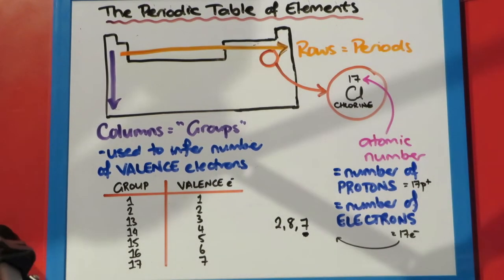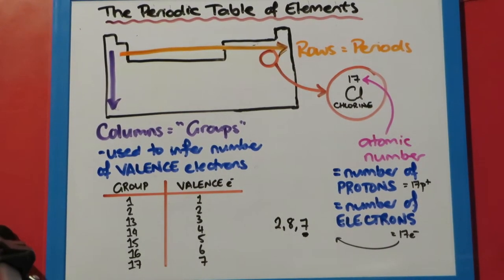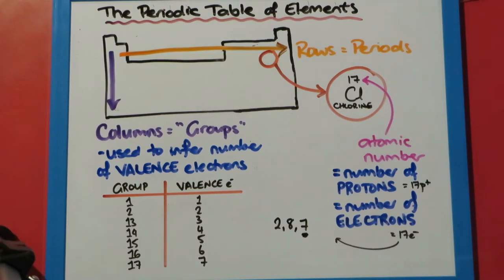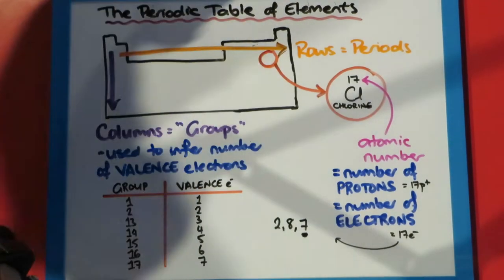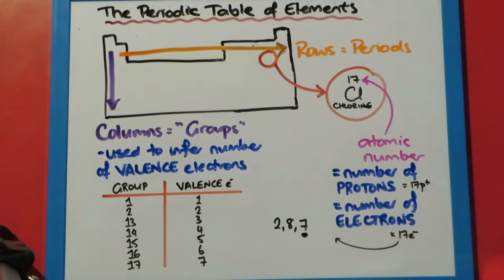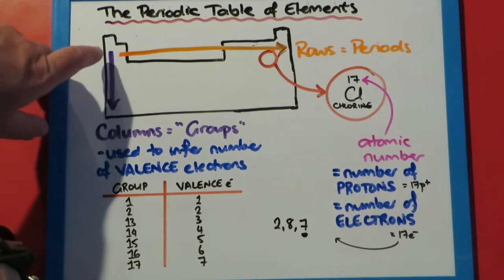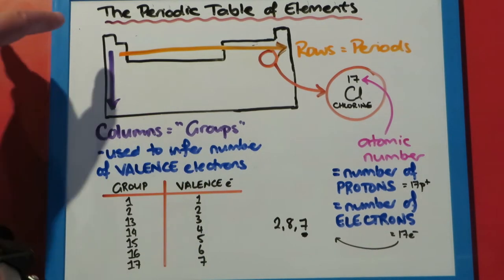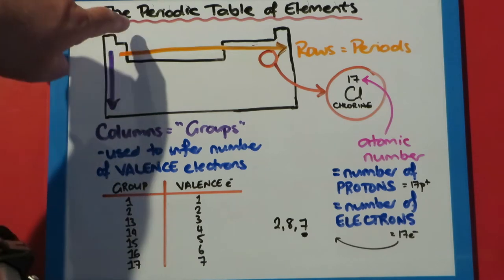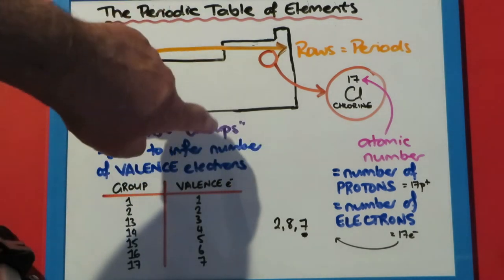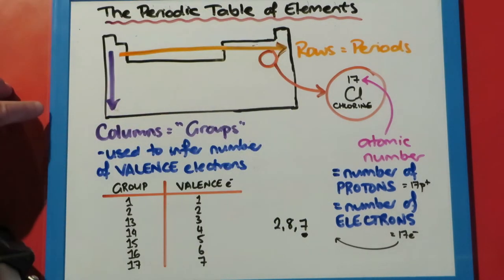The periodic table is one of the most useful things we can have as a chemist. If we know how to use the periodic table, it saves us having to learn a lot of things. The periodic table has this general structure. We've got 18 columns in it and these are called groups.